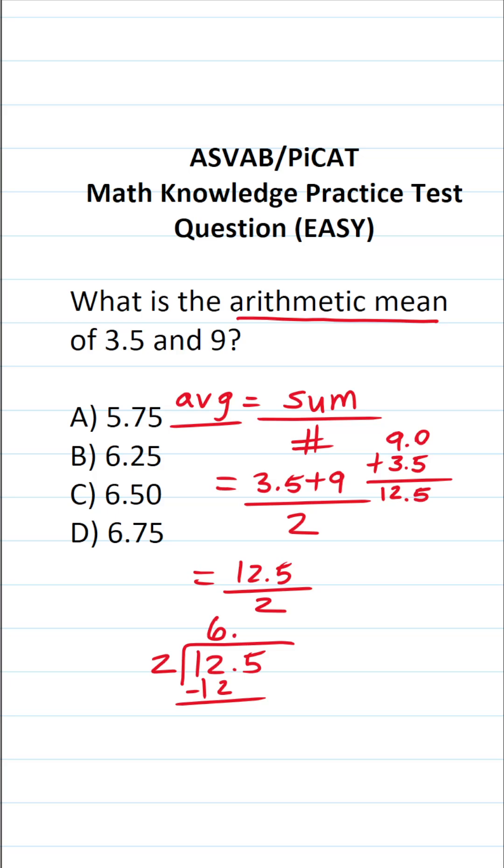2 times 6 is 12. 12 minus 12 is 0. Again, bring that decimal into our answer and drop down this 5. How many times does 2 go into 5 without going over? Well, that's going to be 2 times. 2 times 2 is 4. 5 minus 4 is 1.